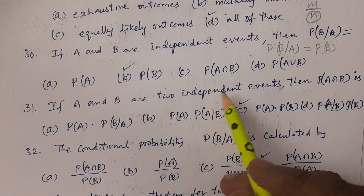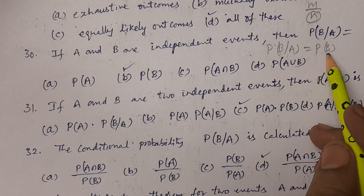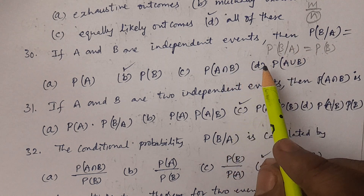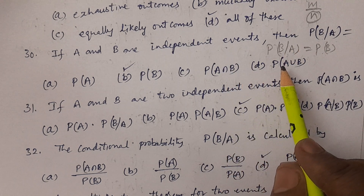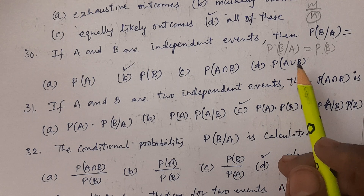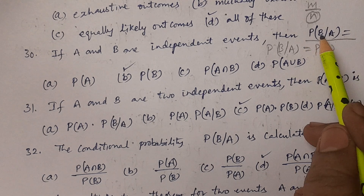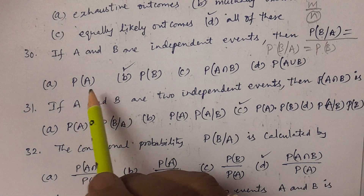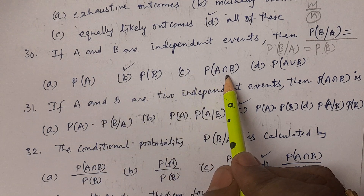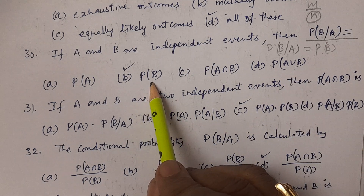Two events A and B are said to be independent if the unconditional probability of B and conditional probability of B are the same. Similarly, P(A|B) = P(A). The answer is probability of B — option B.